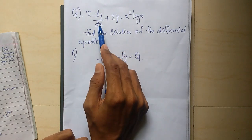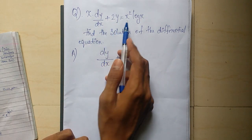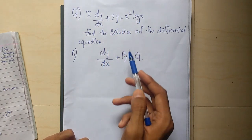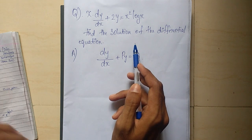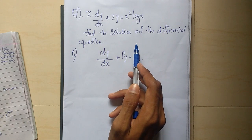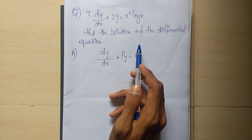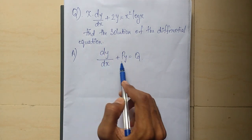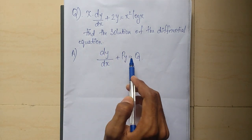Now the second question: x into dy by dx plus 2y equals x squared log x. We write it in standard form dy by dx plus Py equals Q.